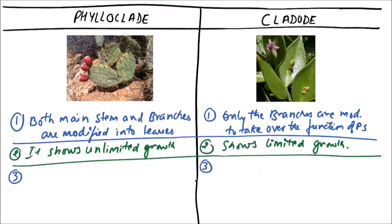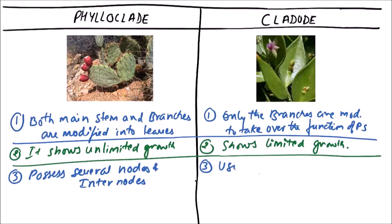A phylloclade possesses several nodes and internodes, which is why its growth is unlimited. Cladodes, on the other hand, usually have only one internode, so we can say that cladodes are usually one internode long.